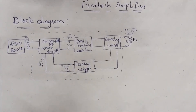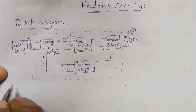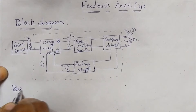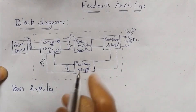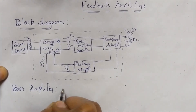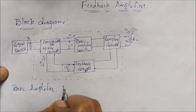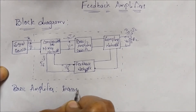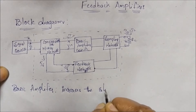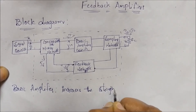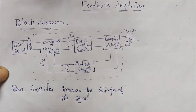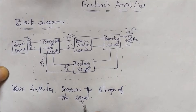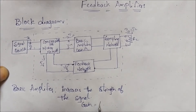Now I will show each and every block in detail. The first block is the Basic Amplifier. As explained in the previous video, the amplifier will increase the strength of the signal. We denote the amplifier gain as A.